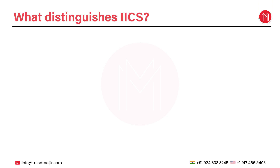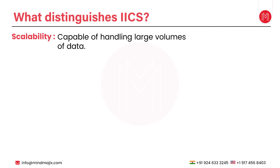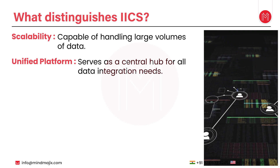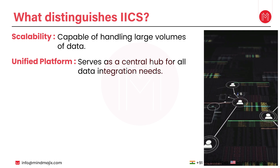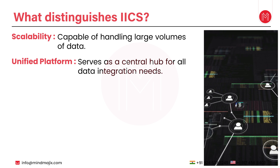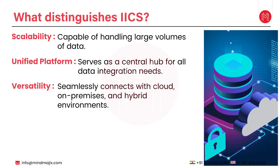What exactly distinguishes IICS? The first point is scalability — IICS is capable of handling large volumes of data. The second feature is that it provides a unified platform, serving as a central hub for all data integration needs, bringing data from different platforms and formats into one place. The third point is versatility — with IICS you can seamlessly connect with cloud, on-premise, as well as hybrid environments.